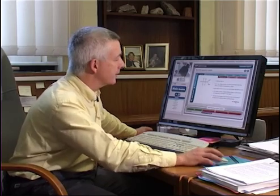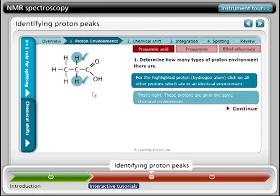If I click the continue button, I can move to the first of these interactive tutorials. This tutorial takes one particular hydrogen atom, one proton, and highlights it with a little blue circle. The tutorial requires me to identify the other protons that are in an identical environment. I can look at this CH2 group, and the second proton here is probably in an identical environment, so I'll check my answer.